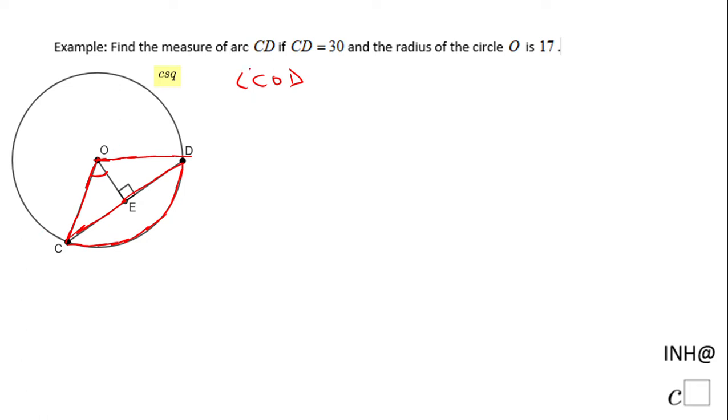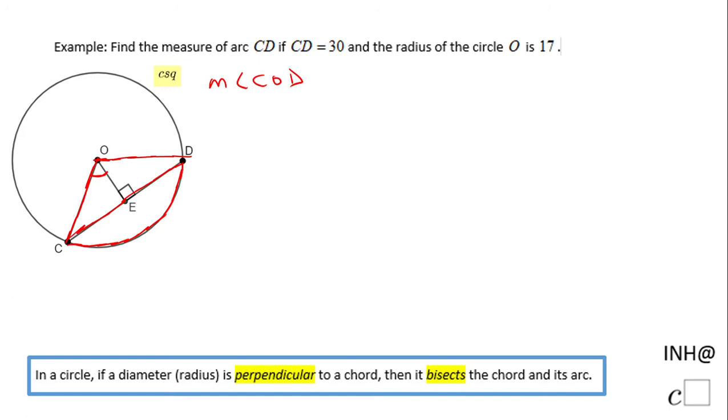For that reason, I'm going to look at this theorem that you see here. In a circle, if a diameter, radius, or a small part of these is perpendicular to a chord, then it bisects the chord and its arc. So we see that OE here, which is a part of a radius, is perpendicular—we see the box here—on the chord.